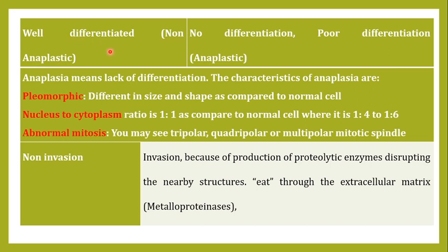Regarding cell shape, benign tumor cells are well differentiated, meaning they have similarity with the normal cells of the surrounding tissue — technically they are non-anaplastic. Malignant tumor cells, however, are poorly differentiated or undifferentiated. The shape of malignant tumor cells differs from the surrounding normal cells, and we use the term anaplastic to describe this poor or absent differentiation.